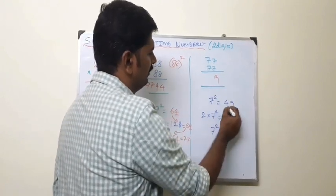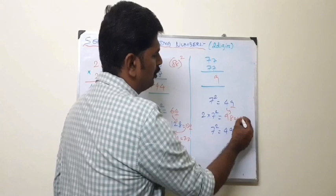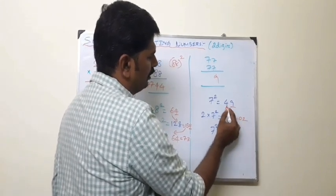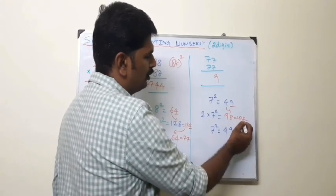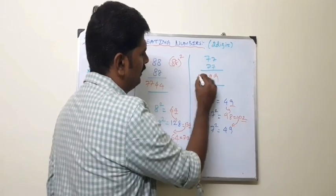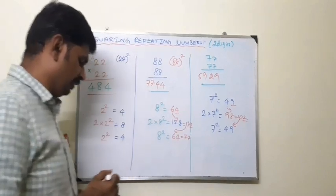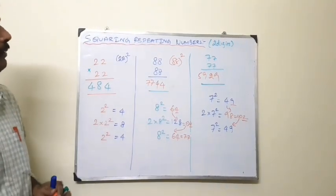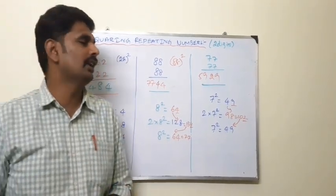Unit digit is 9. 4 plus 98 is 102. So unit digit is 2. Remaining 10, 10 plus 49 is 59 is the answer. So 77 into 77 multiplied by 5929 is the answer.